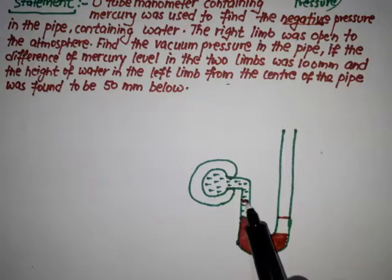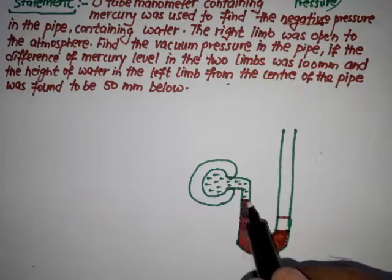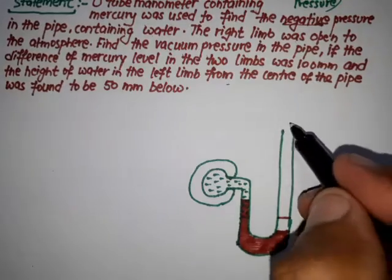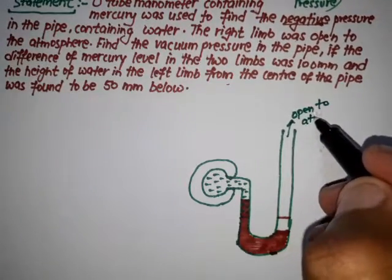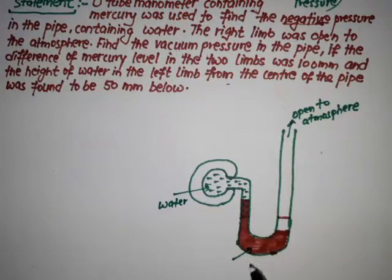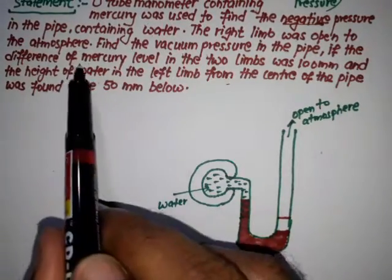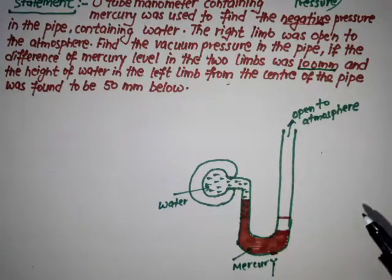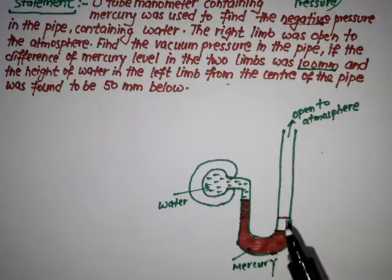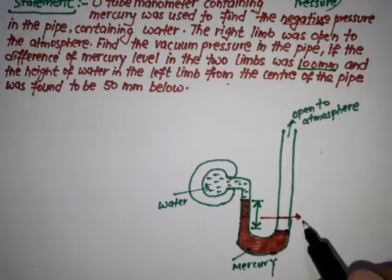In the negative pressure case, this is mercury — this is one end of the mercury and this is the second end. This face is open to the atmosphere. The right limb is open to the atmosphere, and the difference of mercury level in the two limbs is 100 mm. This upper end and this lower end show the mercury level distance, denoted by h2.